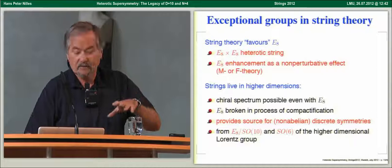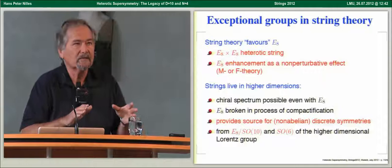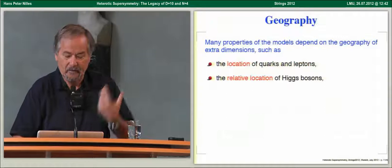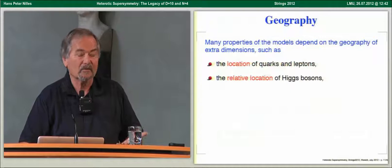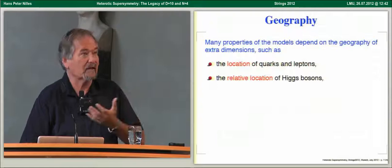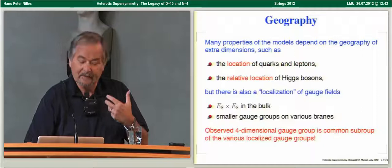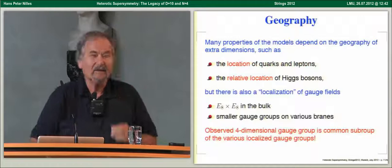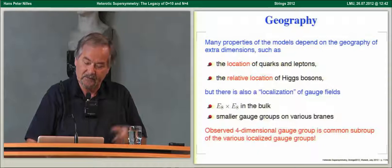SO(6) is a subgroup of SO(9,1), the Lorentz group in extra dimensions. That SO(6) treats bosons and fermions differently, and that is a potential source of R-symmetries. Looking at the geography of fields in extra dimensions, the location of quarks and leptons is important — as is their location relative to the Higgs, because that determines Yukawa couplings. There is also localization of gauge fields: in the heterotic theory, E8 lives in the bulk, but different gauge groups live at different places in the extra dimensions. The observed four-dimensional gauge group is the common subgroup of all these localized gauge groups.